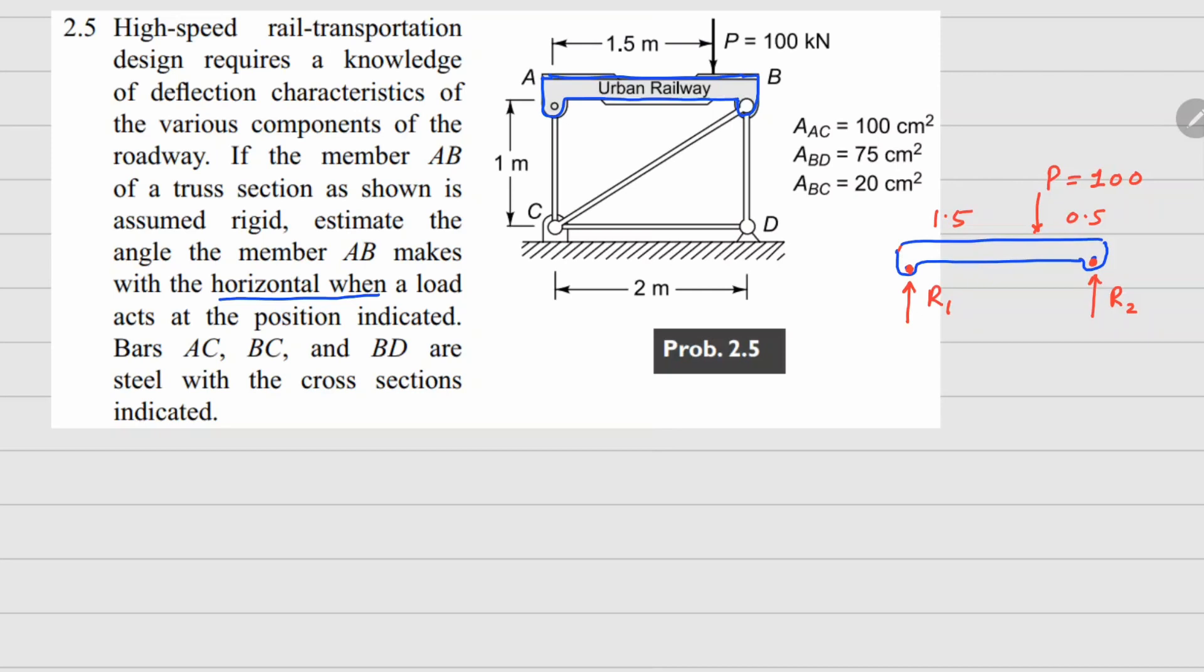We can figure out the value by doing the force and moment balance here. So for this AB member, if I do the force balance, I can write down R1 plus R2 equals to P. And if I take moment about point A here, then I can say 1.5 times 100 and 2 times R2 here. So this gives us R2 equals to 75 kilonewtons and R1 as 25 kilonewtons. These are the forces on AB.